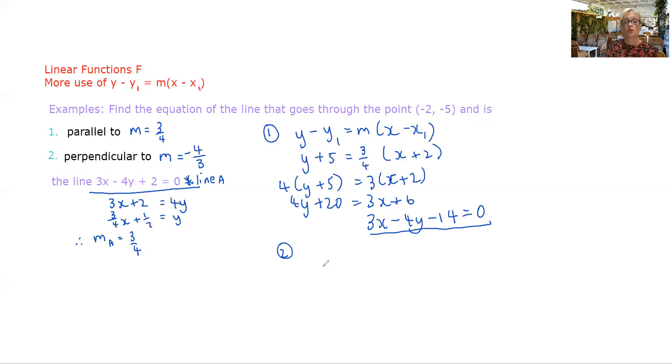Let's have a look at number two. Again using our y - y1 = m(x - x1). Same thing here y + 5 equals, but in this case we're using the negative reciprocal gradient. Multiply through by your denominator.